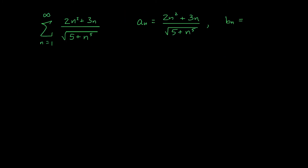If you haven't yet fallen in love with the limit comparison test, you will after this example. Suppose I want to know whether this series converges — it is far from geometric and not something I want to think about integrating. A direct comparison is possible but will require creativity. Instead, let's just feed this to the limit comparison test. The dominating term in the numerator is n squared, and in the denominator — which is under a square root — the dominating term is n to the 5, so under the square root it's really n to the 5 over 2. Simplifying gives b_n equals 1 over n to the 1 half.